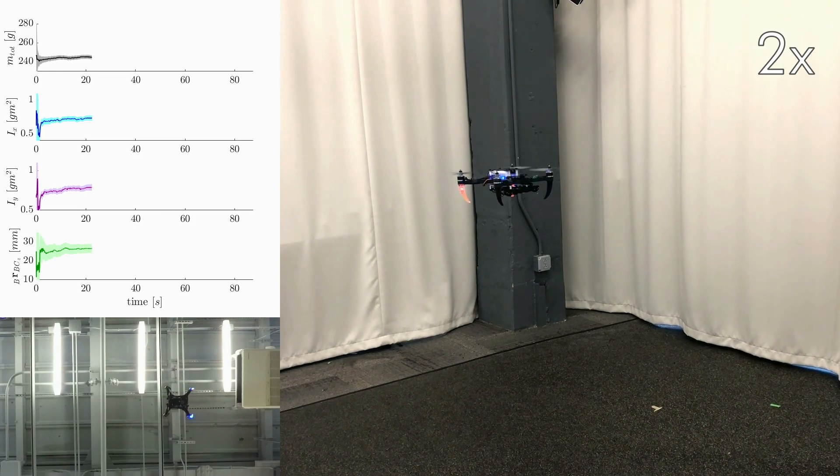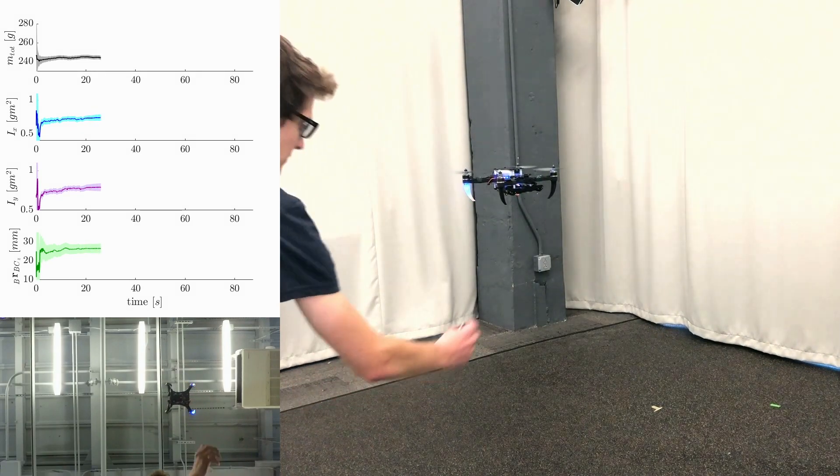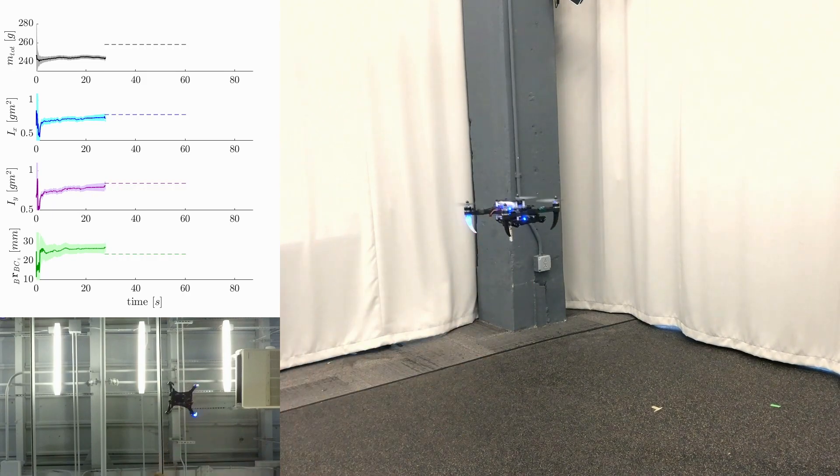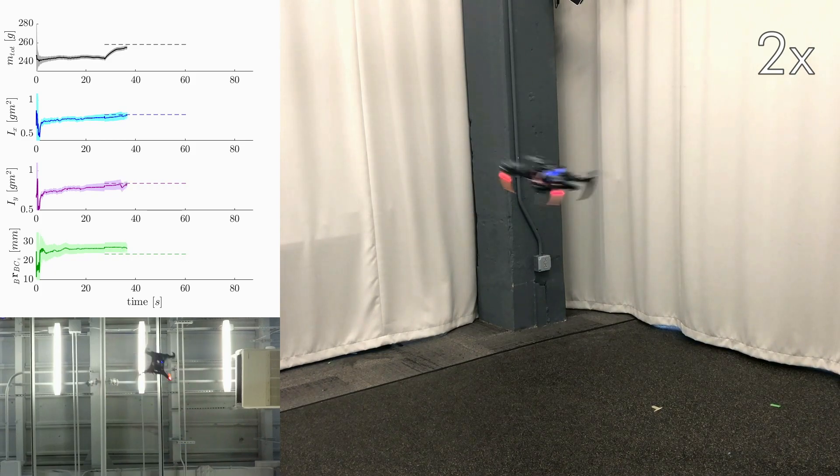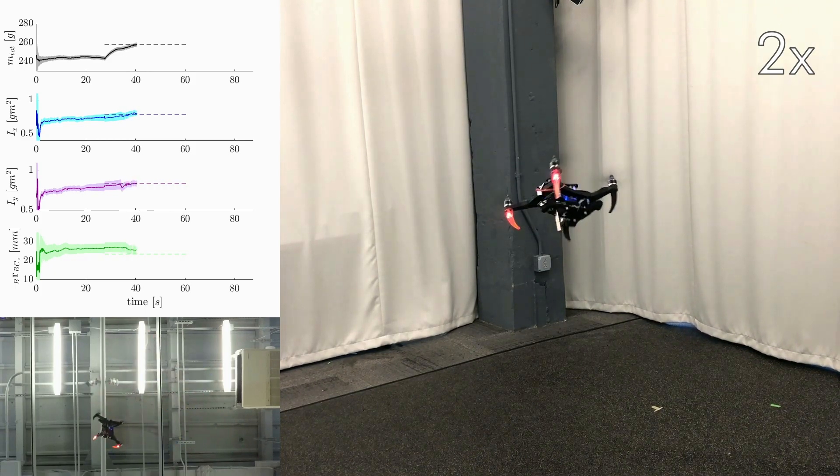We run the trajectory without additional load, then add a weight at the bottom. At this point, the dashed line indicates the new expected value for the estimate to approach.